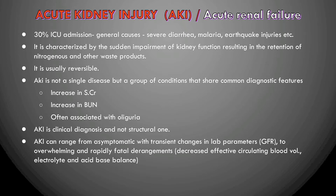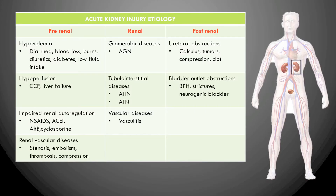AKI can range from asymptomatic with only transient changes in lab investigations such as creatinine or GFR levels, to very severe and fatal presentations where the effective circulating blood volume decreases, electrolyte levels destabilize, and acid-base balance is disrupted.